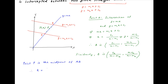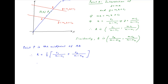Therefore the abscissa H equals half of (c1 upon (m minus m1) plus c2 upon (m minus m2)), and the ordinate K equals half of (mc1 upon (m minus m1) plus mc2 upon (m minus m2)).